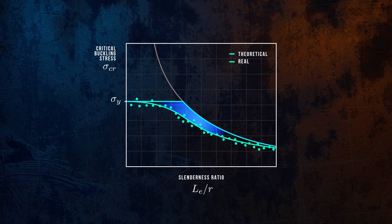Most design codes deal with these limitations of Euler's formula and the complexities of inelastic buckling by providing design curves that engineers can use directly to design columns. These curves are calibrated using experimental data and are applied in combination with suitable safety factors to ensure a safe design.